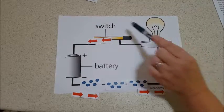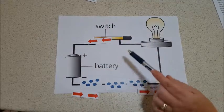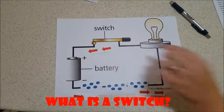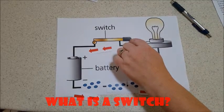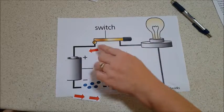We start and stop the electrons with a switch. What is a switch? A switch is made up of two conductors. We start and stop the electron flow with a switch.